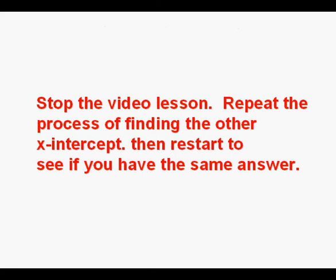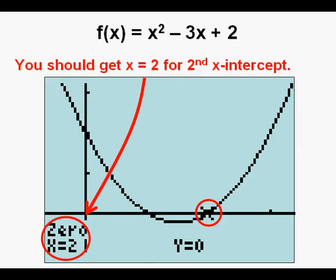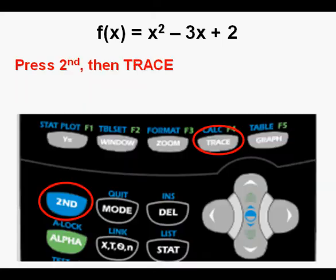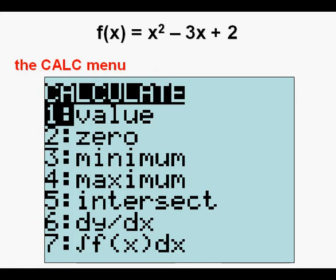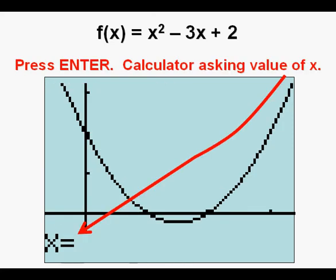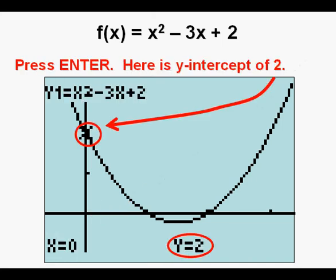Repeat the process to find the other x-intercept. Stop the video, find it, then restart to check — you should get x equals two. To find the y-intercept, press second then trace to get the calc menu. Keep it at option one, press enter, and enter zero for the x value. Press enter. Here we have the y-intercept of two, which we could have already known from the function itself, but this is analytically how to do it with the calculator.